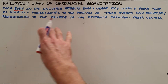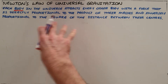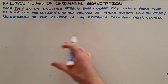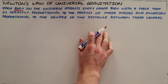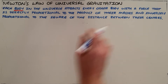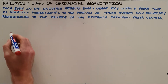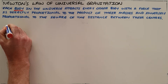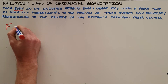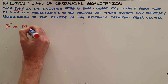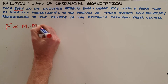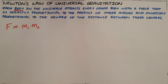We can use this definition to derive the formula, and obviously you can then use the formula to derive the definition. The first thing this says to us is that the force is directly proportional to the product of their masses. We are dealing with two objects, each with a separate mass, so the product of their masses just means the one mass multiplied by the other.